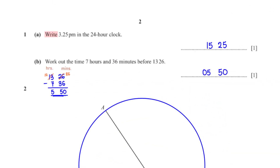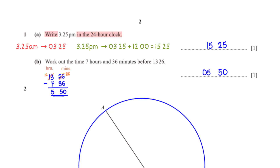Write 3:25 PM in the 24-hour clock. 3:25 AM is 3:25 on the 24-hour clock. To get the equivalent of 3:25 PM on the 24-hour clock, we add 12 hours to 3:25, so we have 15:25.